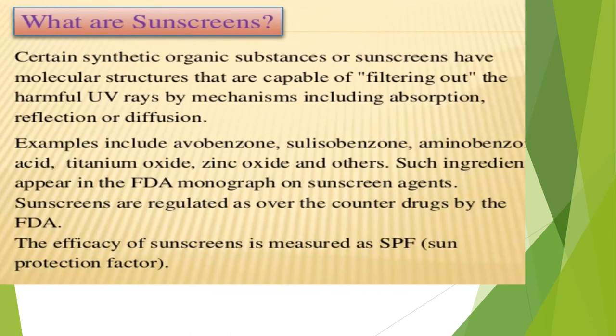Sunscreens are synthetic organic substances capable of filtering out harmful UV rays. They have molecular structures that filter UV rays by mechanisms including absorption, reflection, and diffusion. Sunscreen is the cosmetic preparation used for preventing and filtering UV rays and skin damage. Examples of sunscreen ingredients appearing in the FDA monograph on sunscreen agents include avobenzone, oxybenzone, aminobenzone, benzoic acid, titanium oxide, zinc oxide, and others.